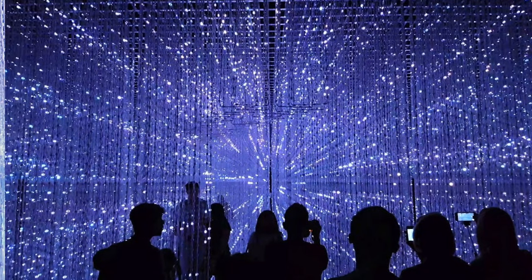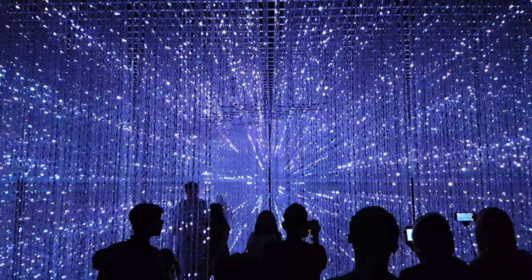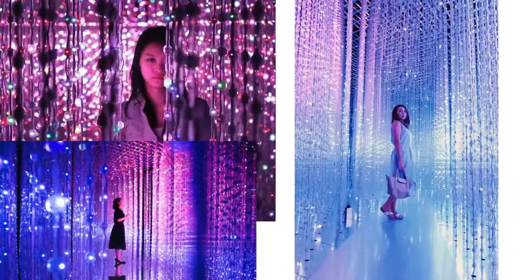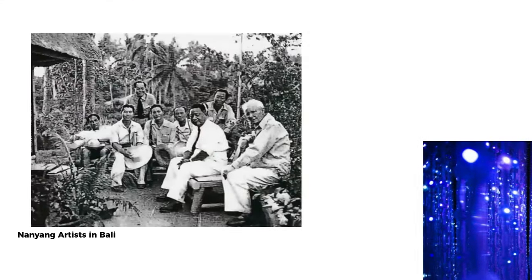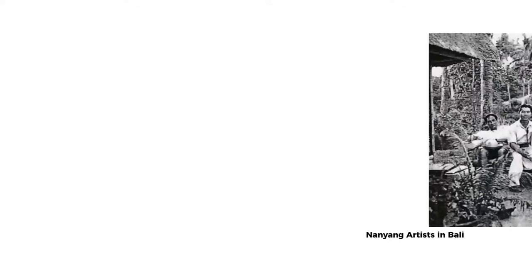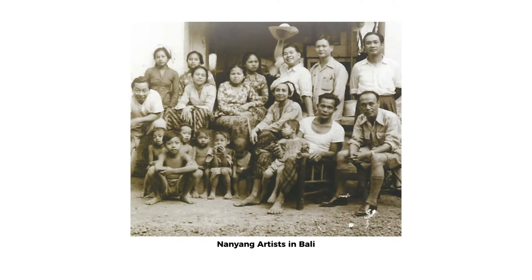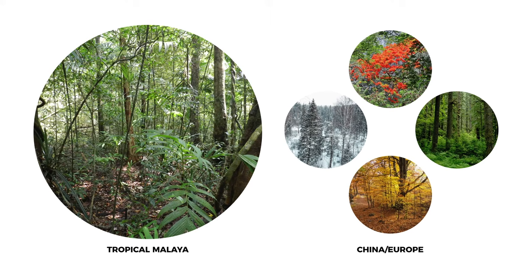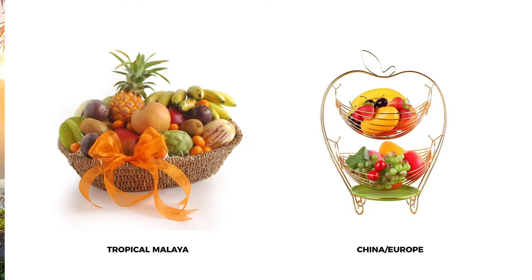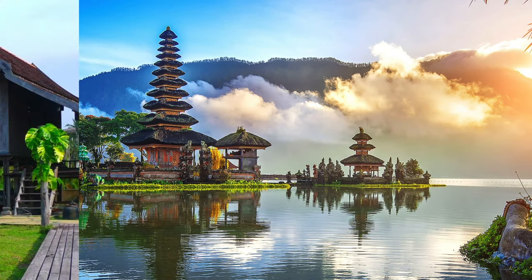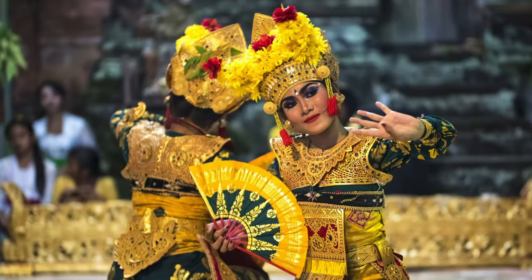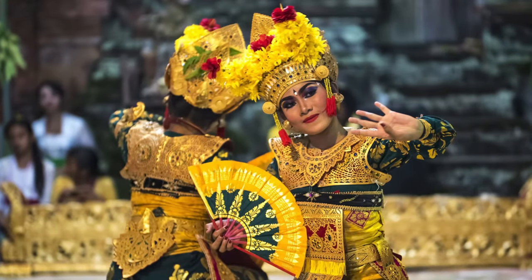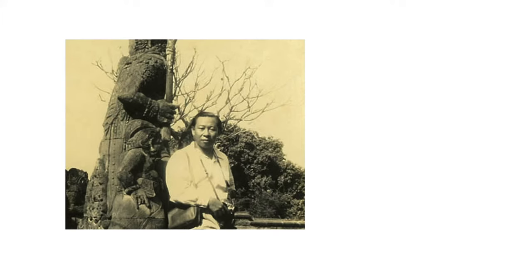Basically, when you are in a new environment that captivates you, you want to capture it — that's why we take Instagram-worthy photos when we find ourselves in a cool new place. It's the same for these artists entering the hot tropical climate of Malaya for the first time. Chinese and Paris experienced the four seasons with different fruits, trees, and weather, so coming to Malaya was life-changing. They saw tropical fruits and trees, and people of different cultures and ethnic garments. When you are mesmerized by what you see, you paint.